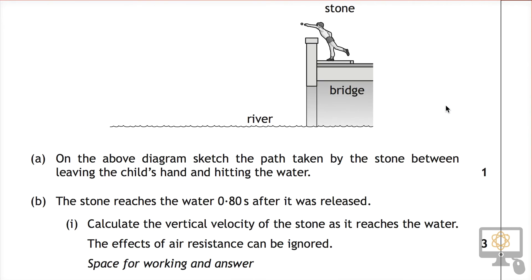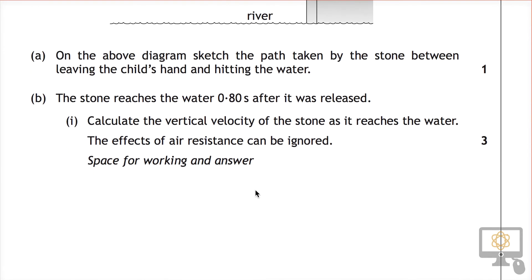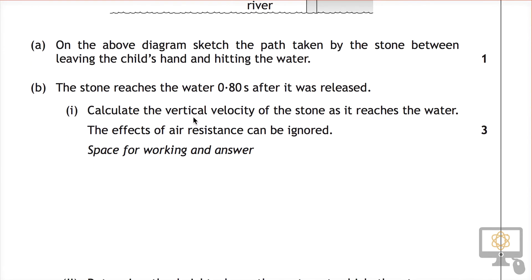What we've got is the stone released horizontally, so with an initial vertical velocity of zero, it travels down and hits the water. And we were asked the question earlier, b part 1, calculate the vertical velocity.